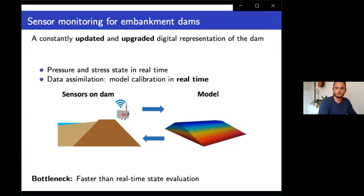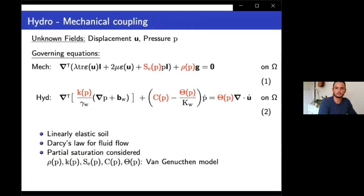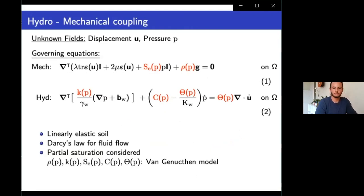An essential obstacle is the response time of the model. In order to have real-time continuous monitoring and data assimilation, high computational efficiency is required. Model order reduction is applied to the coupled hydromechanical equations that describe water flow through earth-fill dams in order to speed up the response of the model. The coupled problem is described by two governing equations: mechanical equilibrium and water mass conservation. We are solving for two unknown fields, displacement and pore water pressure. Due to partial saturation of the porous material, non-linearities are introduced to most terms of the coupled problem. Linear elasticity is considered for the soil and Darcy's law for the groundwater flow.